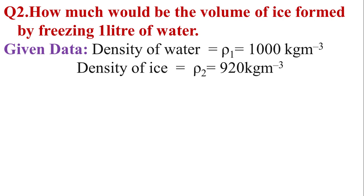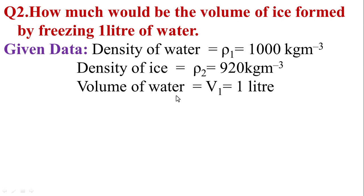First of all, write the given data. Density of water, rho₁ = 1000 kg per m³. And density of ice, rho₂ = 920 kg per m³. These values are constant. The volume of water is also given: V₁ = 1 liter.